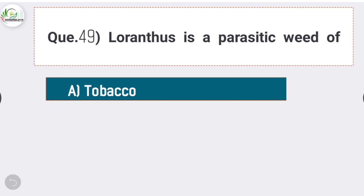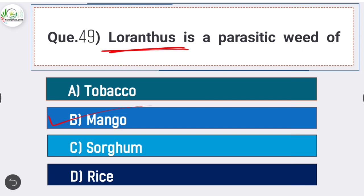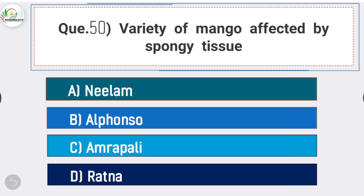Question number forty-nine: Loranthus is the parasitic weed of - answer is option B - mango. Loranthus is the parasitic weed of mango. Question number fifty: variety of mango affected by spongy tissue is - answer is option B - Alphonso. The variety of mango affected by spongy tissue is Alphonso.